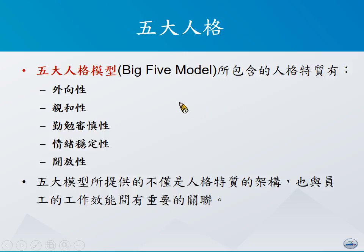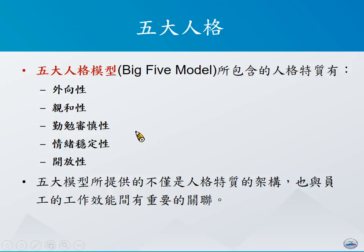举例来讲，假设有一个人个性外向好动，同时又非常不具备情绪稳定性，如果这个人来担任会计人员的工作，很容易因为粗心大意而使工作面对失败。但反过来说，如果探讨的是研发人员，我们可能并不会希望这个人太过谨慎，因为做研发面对的是未知的风险，所以我们会希望他能够有勇气去冒风险，因此太高的谨慎性特质可能就不适合研发人员。